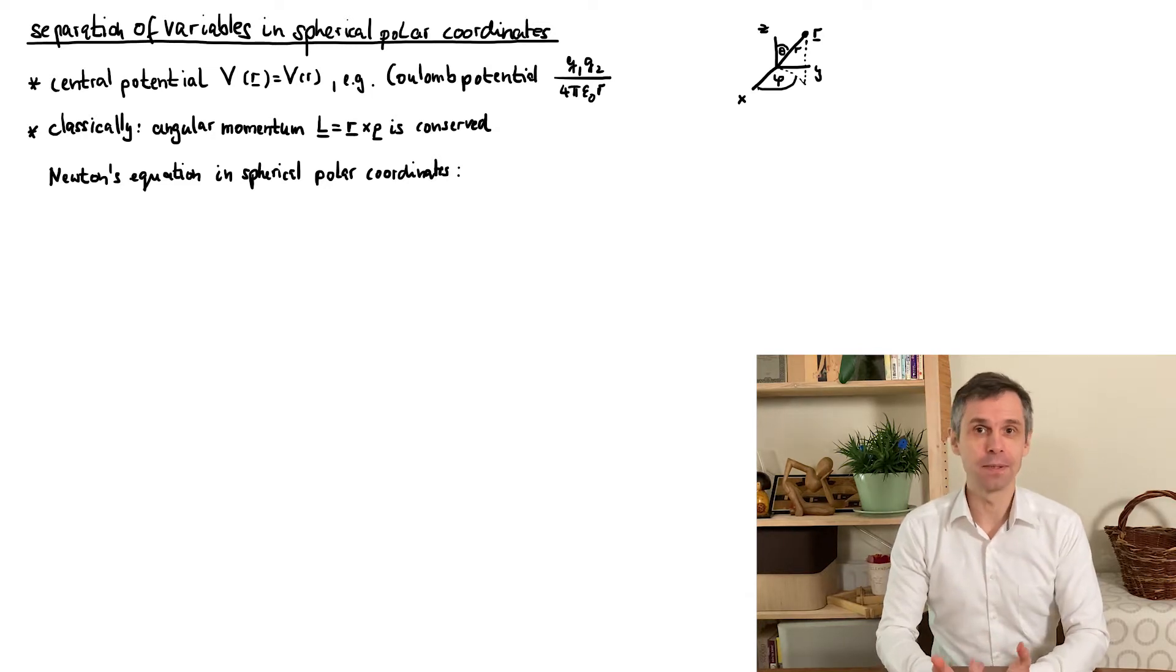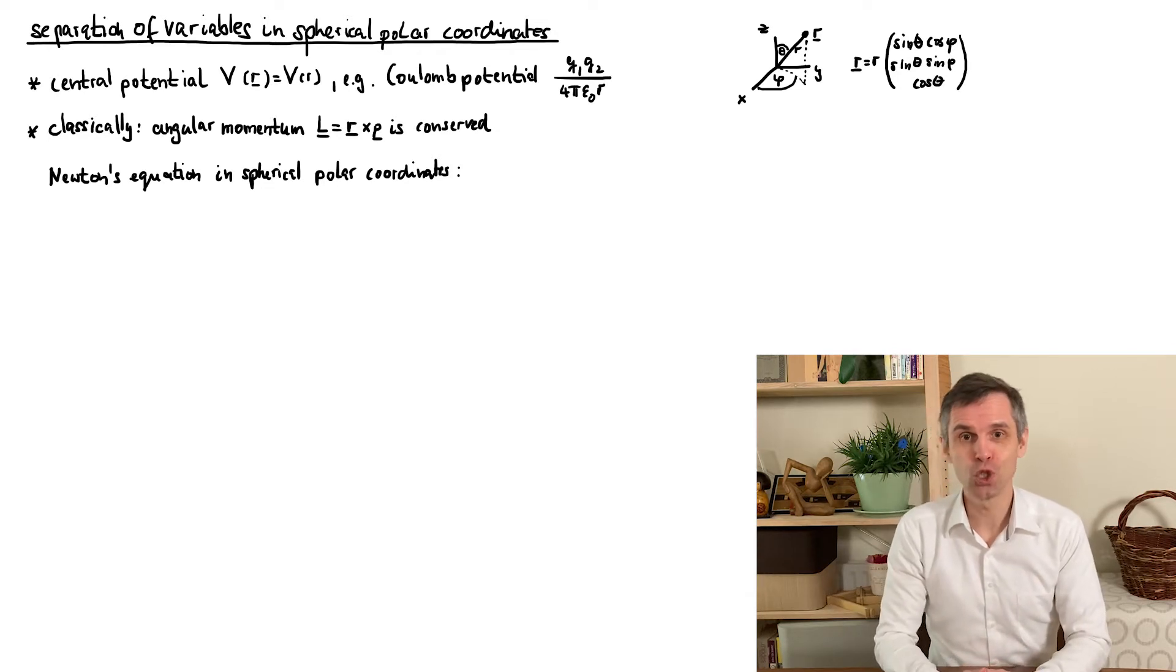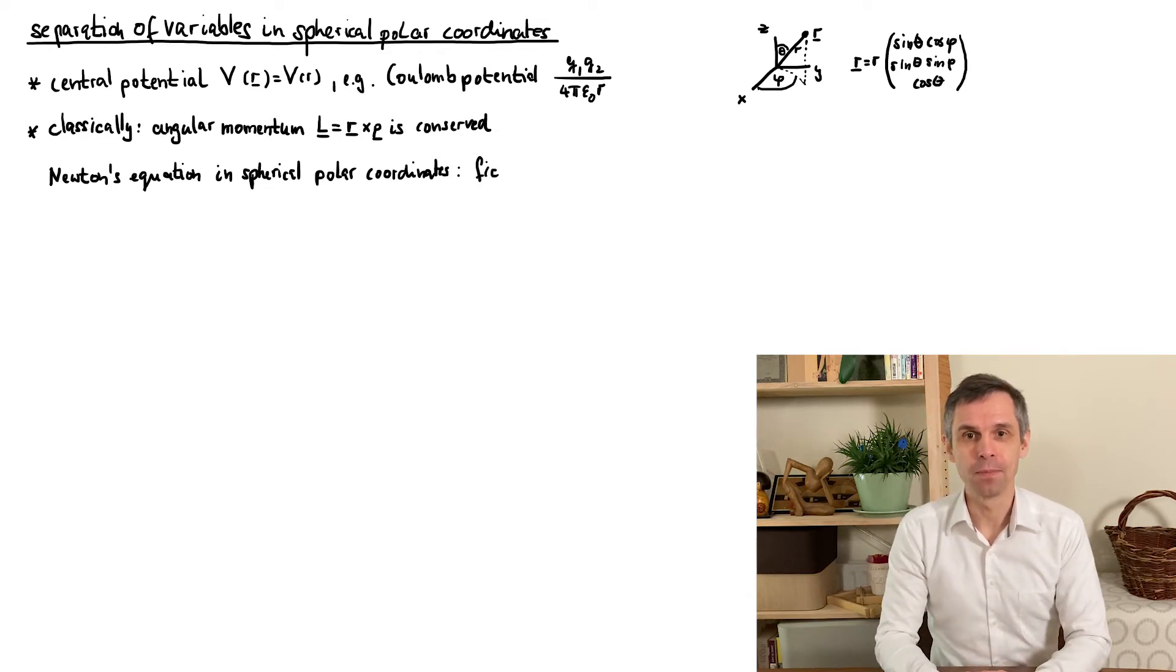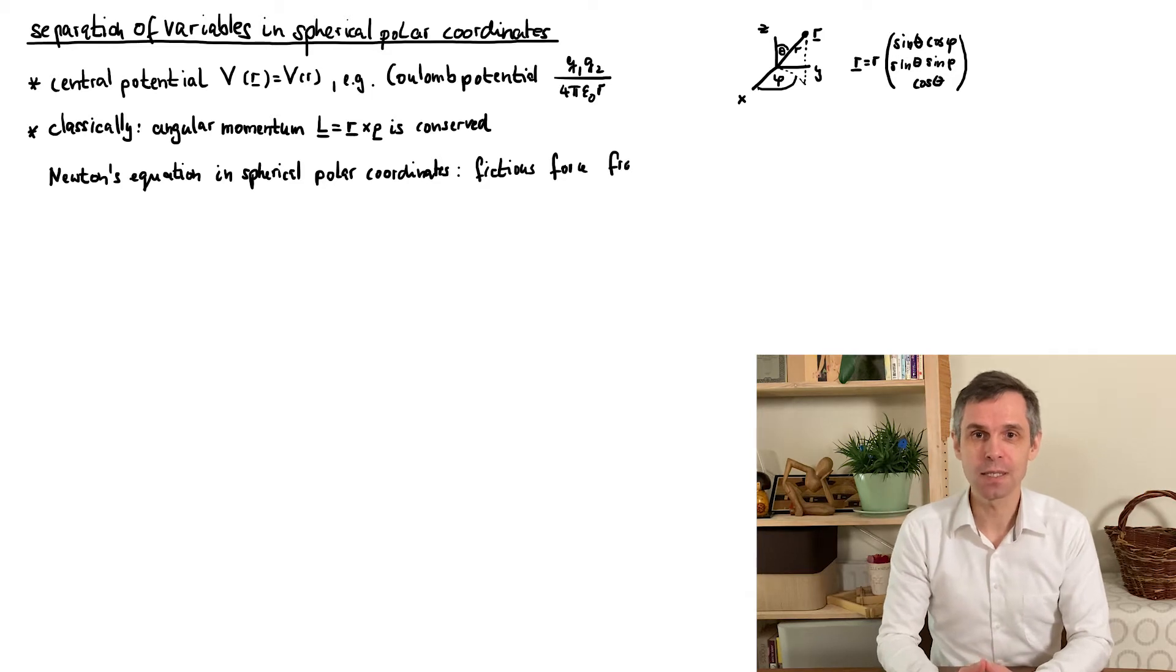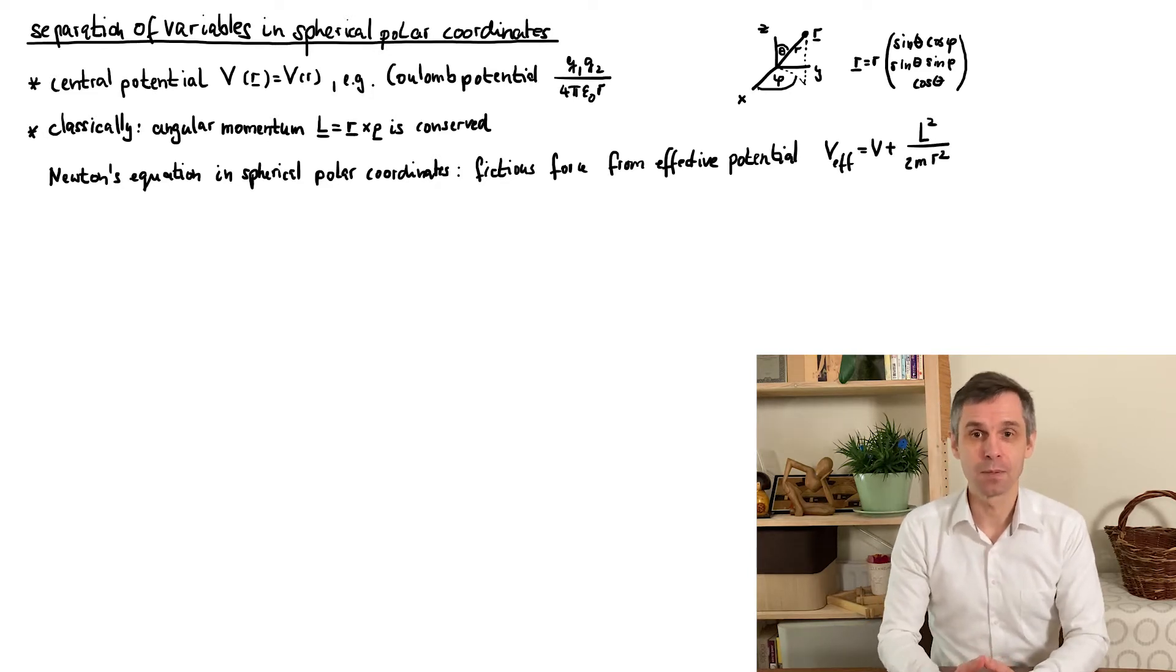The position vector can then be written as shown. What you obtain in this way is a modified classical equation of motion in which angular momentum appears via fictitious forces that can be written in terms of an effective potential. As you can see this potential is proportional to the absolute value squared of angular momentum and inversely proportional to the squared radial distance.